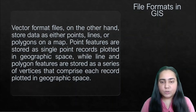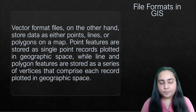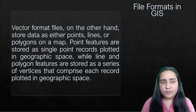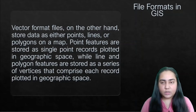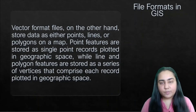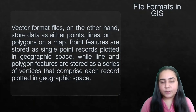Line and polygon features are stored as a series of vertices that comprise each record plotted in geographic space. If you want to plot a river or a road, you would use multiple points. And if you had to plot an entire city or country, you would use polygons, since those also involve multiple points.